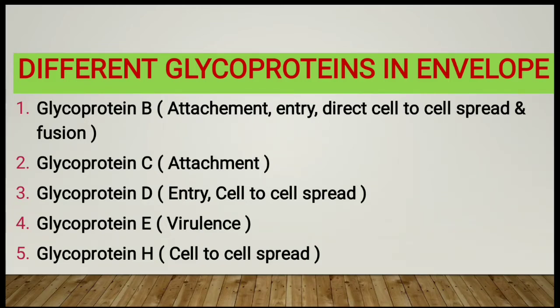Glycoprotein B helps in the functions of attachment, entry, and direct cell-to-cell spread. Glycoprotein E has the function of virulence, while glycoprotein H has a cell-to-cell spread function.